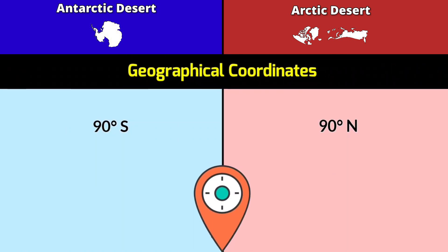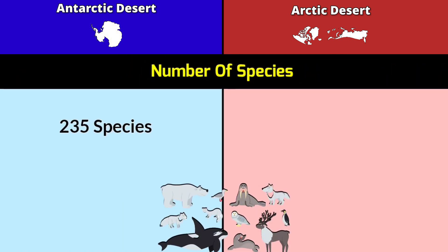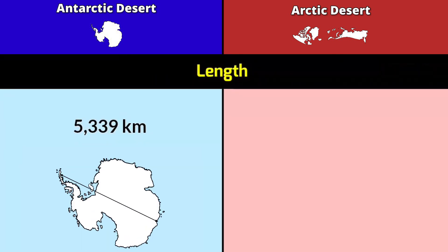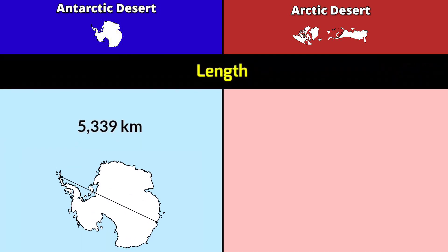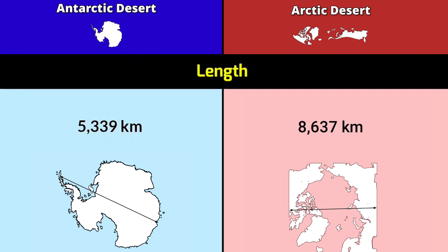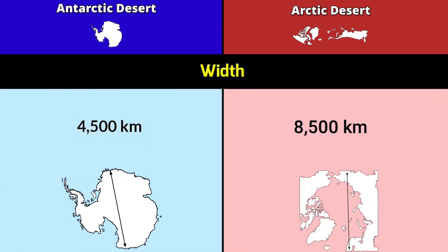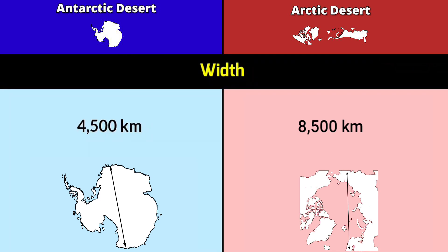Number of species: Antarctica Desert has 235 species; Arctic Desert has 5,500 species. Length: Antarctica Desert is 5,339 kilometers; Arctic Desert is 8,637 kilometers. Width: Antarctica Desert is 4,500 kilometers; Arctic Desert is 8,500 kilometers.